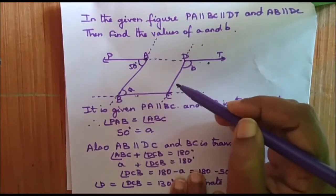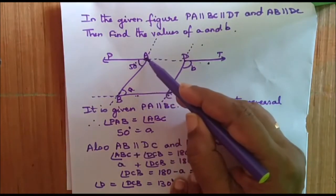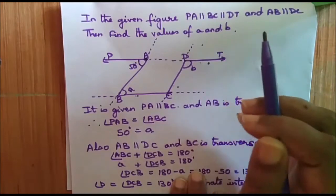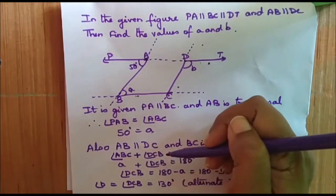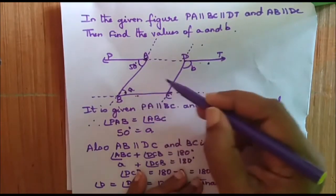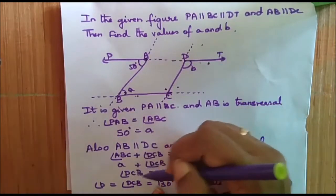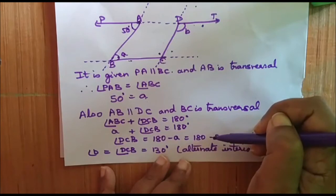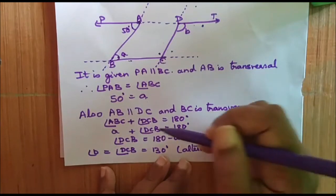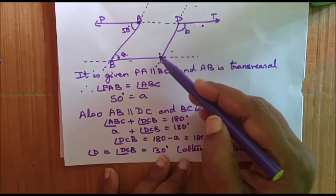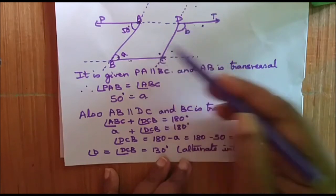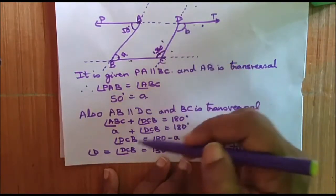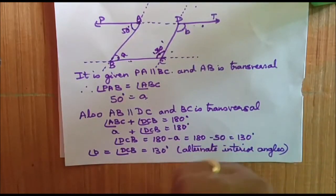Similarly, if AB is parallel to DC and BC is the transversal, then angle ABC plus angle DCB equals 180 degrees. So angle DCB equals 180 minus 50, which equals 130 degrees. Since angle B and angle DCB are alternate interior angles, B equals 130 degrees.